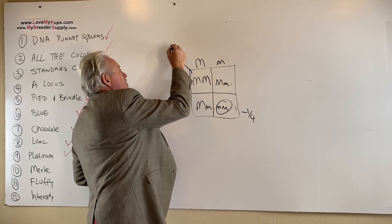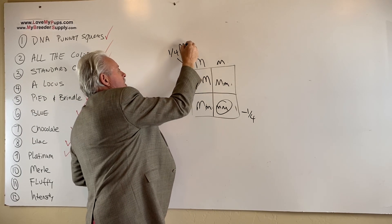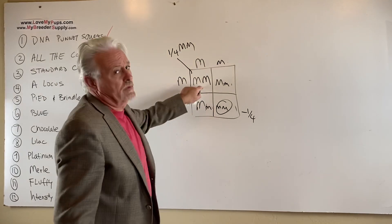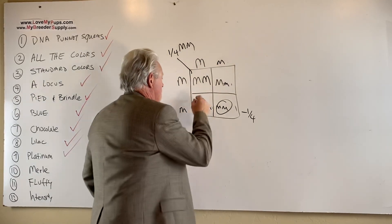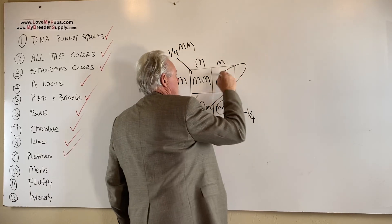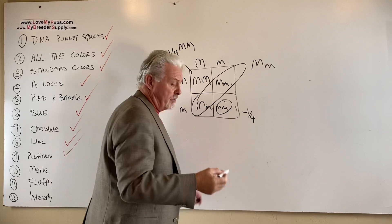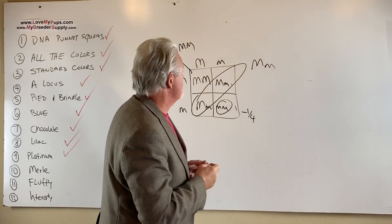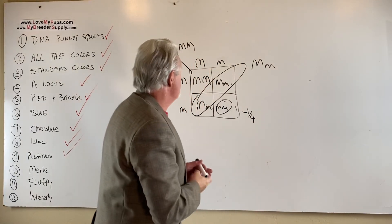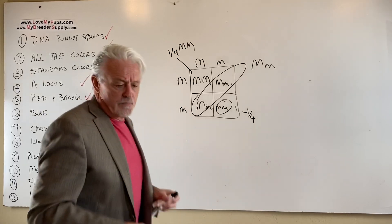One quarter of the dogs are double Merle. Those dogs are in trouble. That's the ones you don't want. Half the litter, half the litter carry one copy of Merle. It just takes one copy because the dominant gene and those are the dogs that do fine.